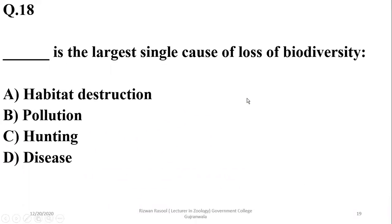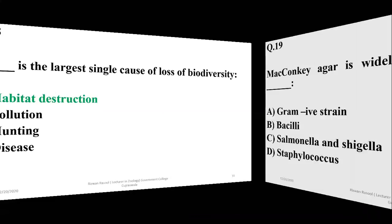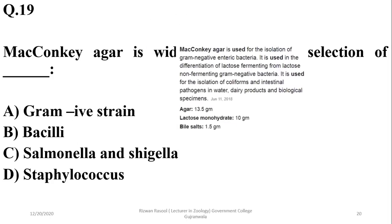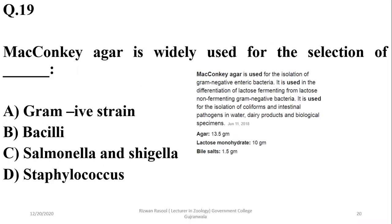Question 18: The largest single cause of loss of biodiversity is habitat destruction, according to me — option A. Question 19: MacConkey agar is widely used for the selection of gram-negative strains of bacteria, so the right option is A.